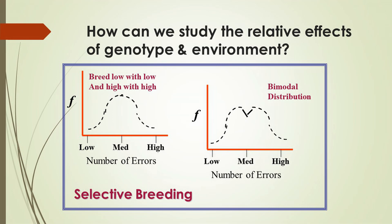He ran a large group of rats through a maze and identified the number of errors that each rat made. Some rats made many errors, other rats made few errors, but the vast majority made a medium number of errors. Then the researcher used selective breeding — he bred the rats that made few errors with each other and bred the rats that made many errors with each other.